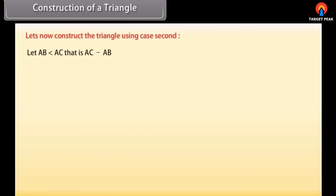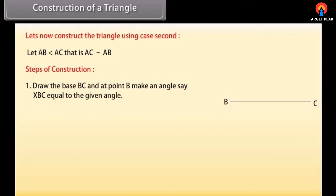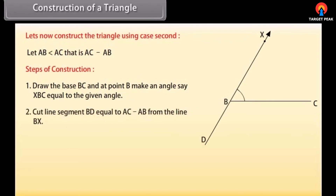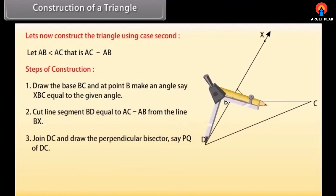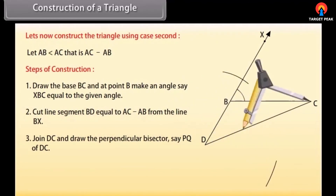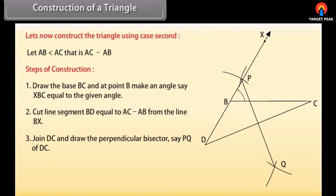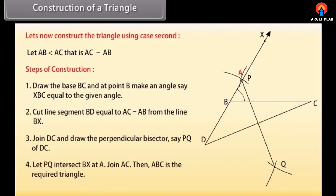Case 2 — when AB is less than AC (AC minus AB is given): draw the base BC and at point B make angle XBC equal to the given angle. Cut line segment BD equal to AC minus AB from line BX. Join DC and draw perpendicular bisector PQ of DC. Let it intersect BX at A. Join AC. Then ABC is the required triangle.